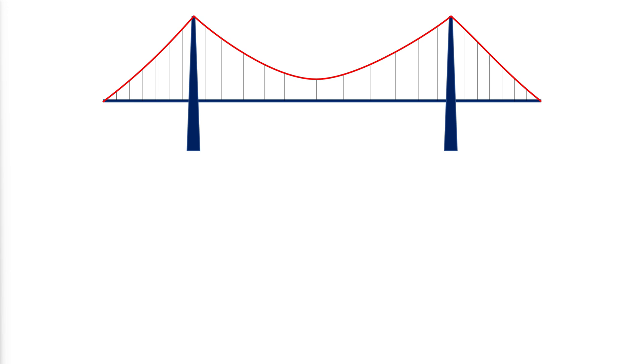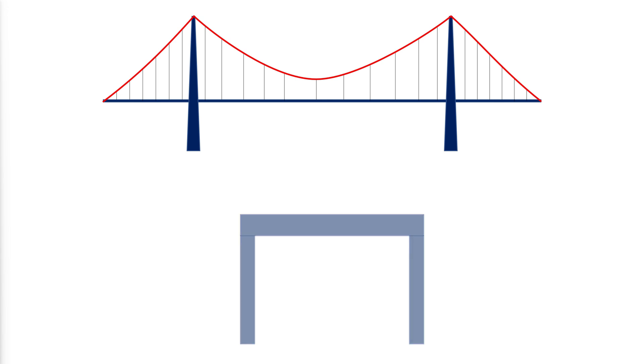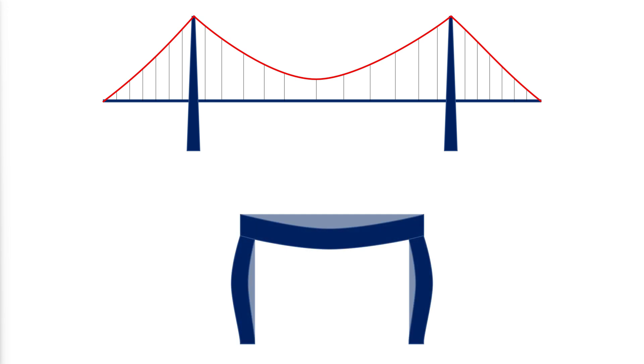To understand the behavior of cable-supported bridges, it is essential to know how the basic element — the single cable — responds to different loadings. In this context, it is important to realize that many engineers' intuitive understanding of structural behavior is linked to the response of beams and columns in a load-carrying system. However, in a number of aspects, the cable will show a behavior that is quite different from that of beams and columns.